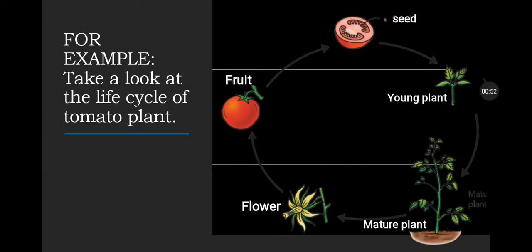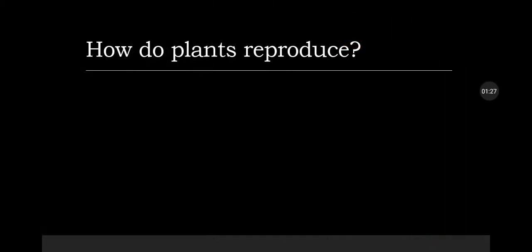For example, take a look at the life cycle of a tomato plant. Starting from the seed which is present within the fruit, when these seeds fall on the ground they will germinate into a young plant. This young plant then grows into a mature plant. The mature plant bears flowers and these flowers develop into fruits. These fruits also have seeds and the cycle will continue again.